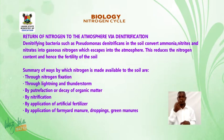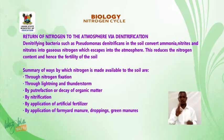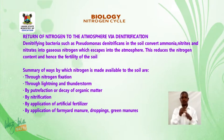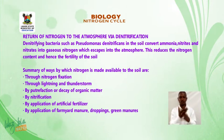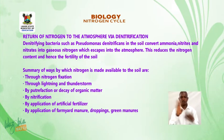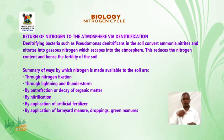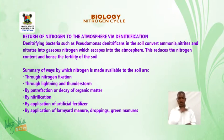Summary of ways by which nitrogen is made available to soil: through nitrogen fixation, through lightning and thunderstorms, by putrefaction or decay of organic matter, by nitrification, by application of artificial fertilizer, and by application of farmyard manure, droppings, and green manure.